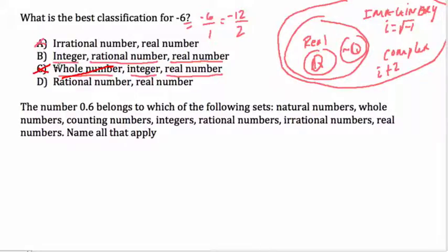Then last, we have D. Now, this is confusing because, yes, we just said it is rational and real. That's true, but B is a better choice because it also describes it as an integer, which it is. So they're looking for the best classification, and B is the answer.